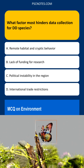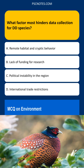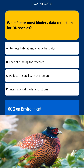Explanation: Data Deficient (DD) species are, by definition, lacking sufficient information to assess their extinction risk. The primary reason for this lack of information is that these species are difficult to find and study. Remote habitats make access challenging.